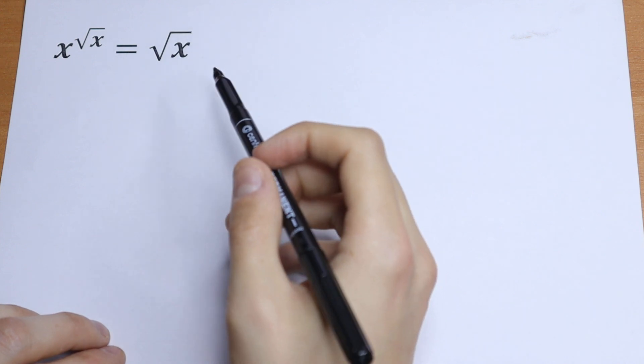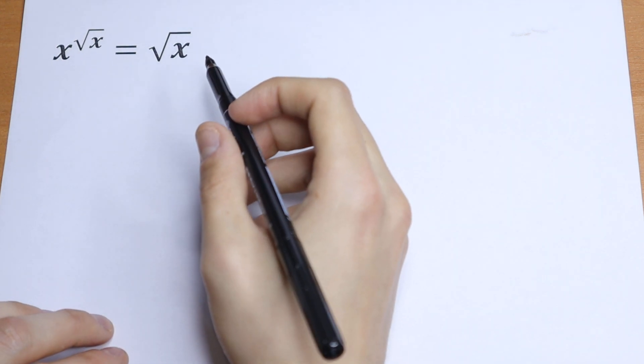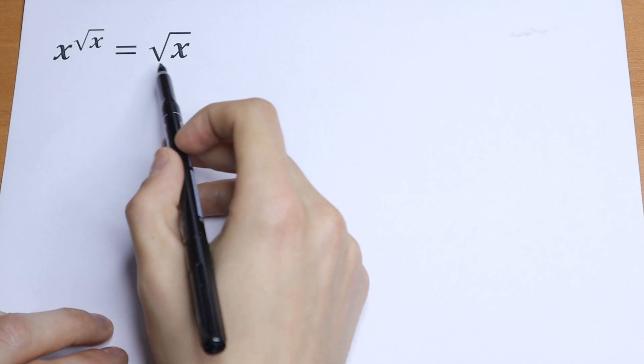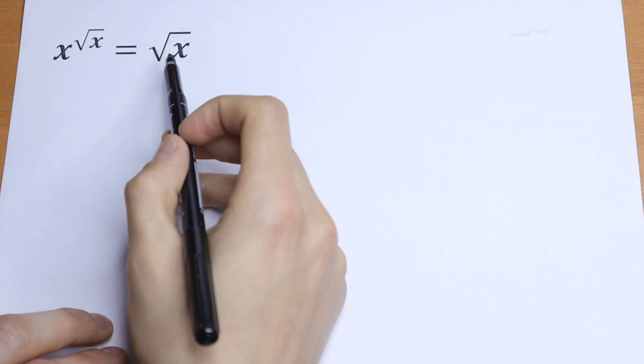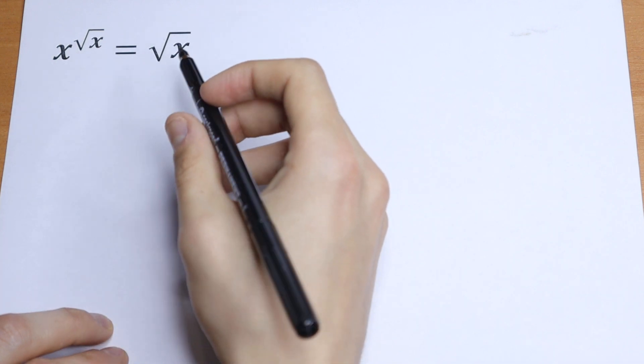So let's try to solve it, let's try to simplify this a little bit. We have square root of x on the right, so we can divide both sides by it and we'll have one on the right. This is a really good simplifying trick.